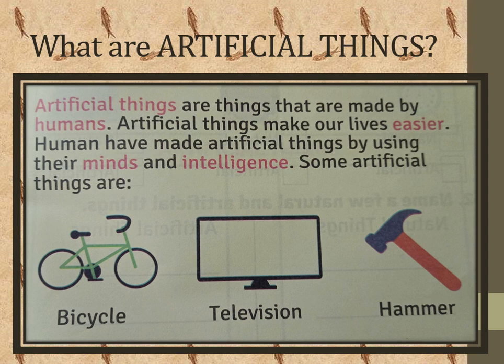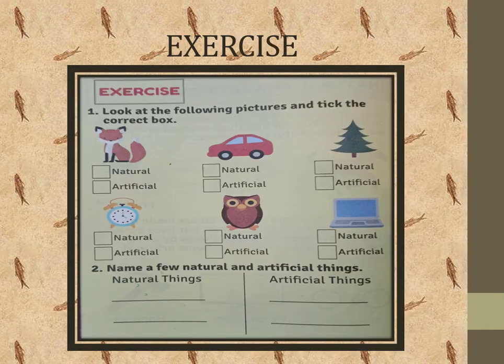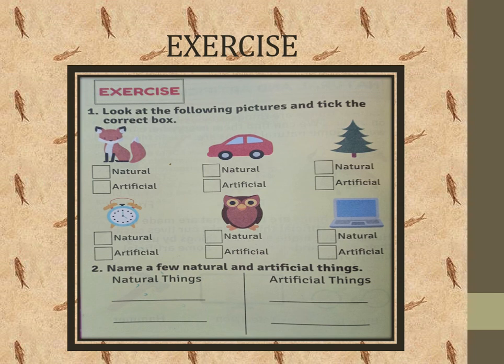Now you have to open your exercise. This is a page from your book. You have to solve these questions. Look at the following pictures and tick the correct box — find out the natural and artificial things. For example, I can solve only one for you: the first picture is of a fox. Can you tell me, is this natural or artificial? Obviously, it is a natural animal. So you will tick mark the natural one box.